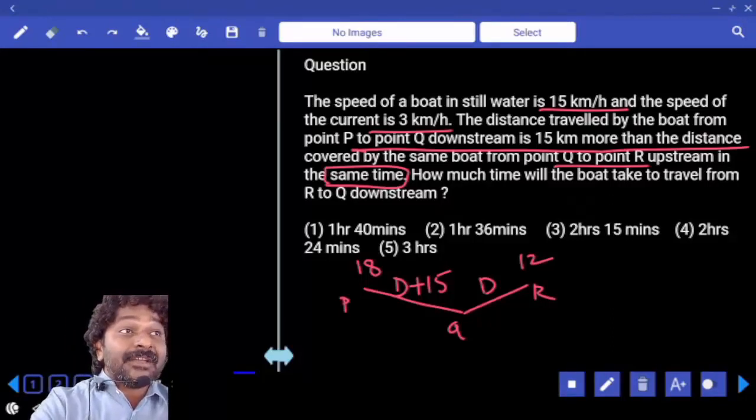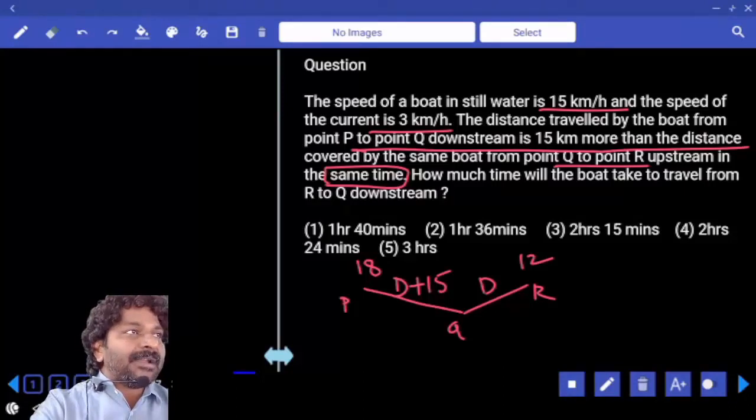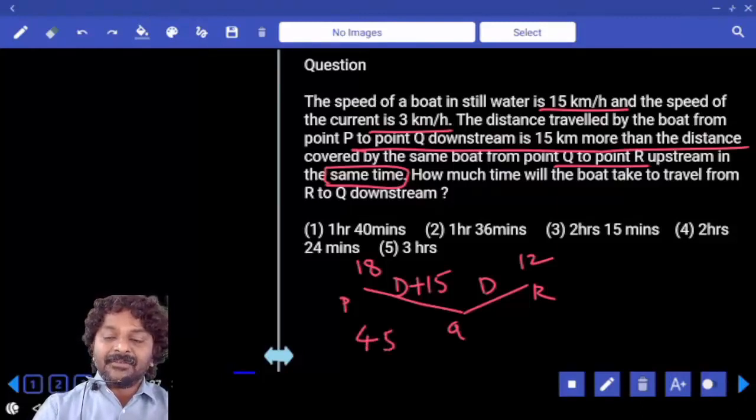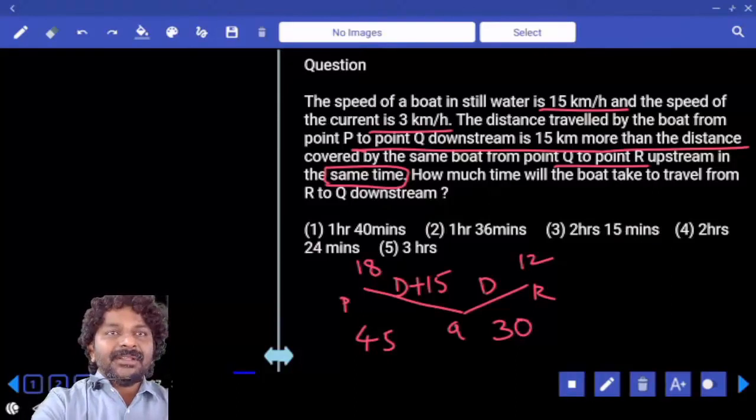How many parts difference? How many kilometers difference? One part is equal to 15. Three parts is 45, two parts is 30. So distance from Q to R is 30 km.